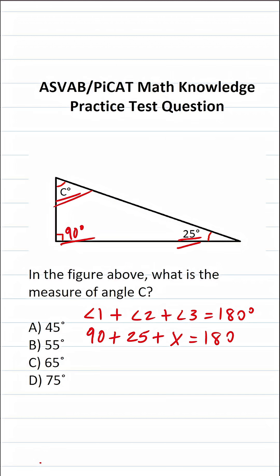So all we have to do is solve this equation for X, and we'll have our answer. First thing I want to do is add 90 and 25, so that becomes 90 plus 25. On the ASVAB and PiCAT, you're not given a reference sheet or a calculator, so you want to get in the habit of working things off to the side as much as possible.